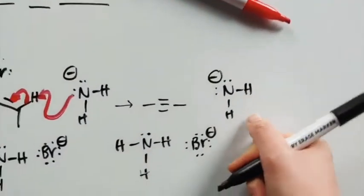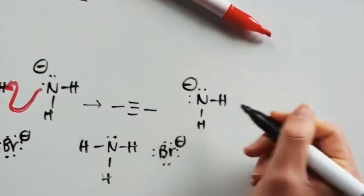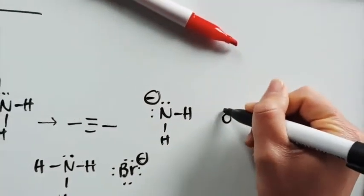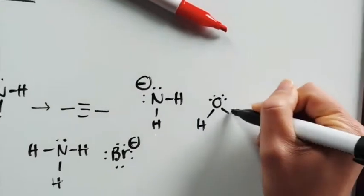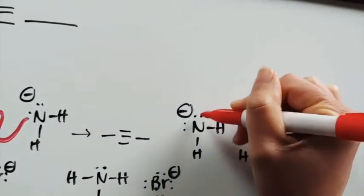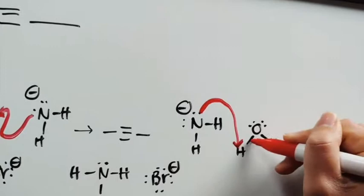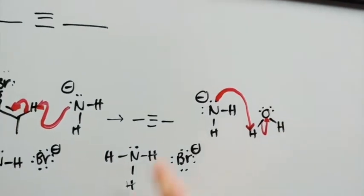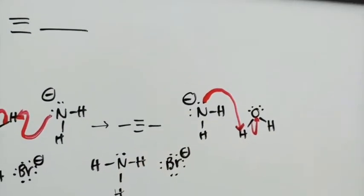And so how are we going to get rid of this? Well we need to protonate the NH2 minus and so we're going to do that by taking water and deprotonating the water. Now some of you may be saying, wait, what happened? I thought that we would take a hydrogen from here or something like that.